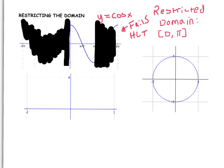So there you go, now it passes the horizontal line test, and its inverse, therefore, will pass the vertical line test. So here's what the graph of inverse cosine will look like.